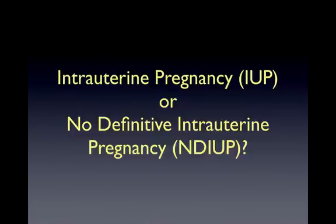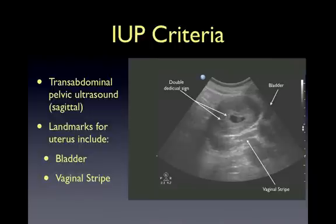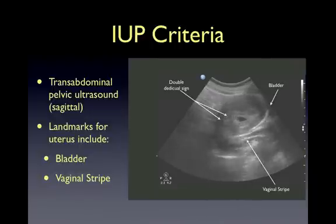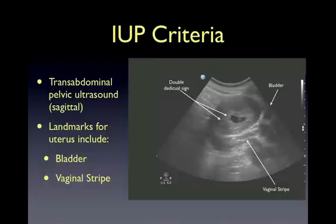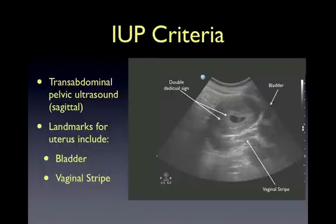Now that you have learned how to perform a systematic transvaginal pelvic ultrasound, we'll move on to our second objective: how to distinguish between an intrauterine pregnancy and no definitive intrauterine pregnancy. You should always attempt a transabdominal pelvic ultrasound first. Using a sagittal view, your landmarks for the uterus will be the bladder and the vaginal stripe. You need to see at least a gestational sac within the uterus containing a yolk sac or a fetal heartbeat to conclude a patient has a viable intrauterine pregnancy. The gestational sac should always be surrounded by at least 8 mm of endomyometrium, called the endomyometrial or uterine mantle.